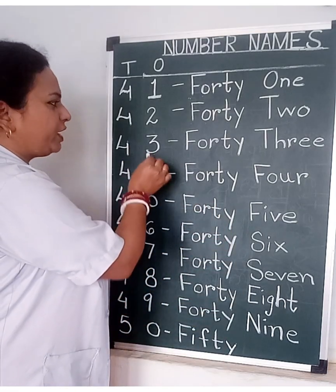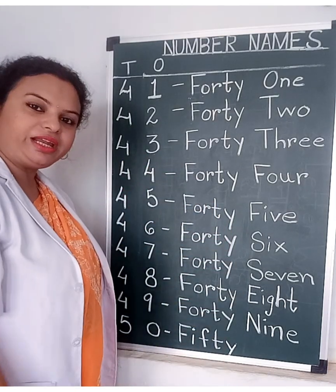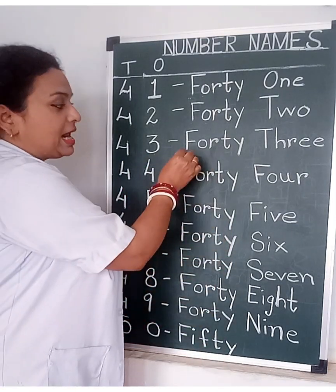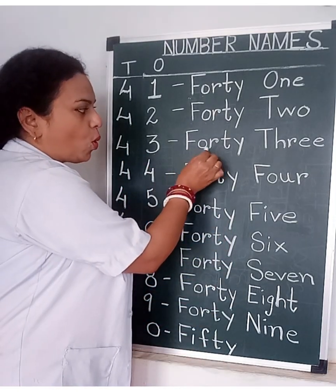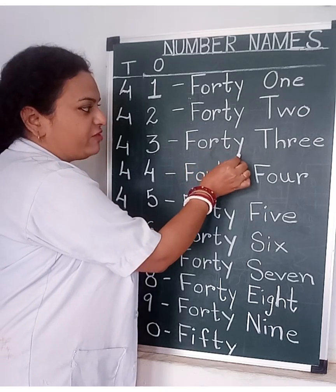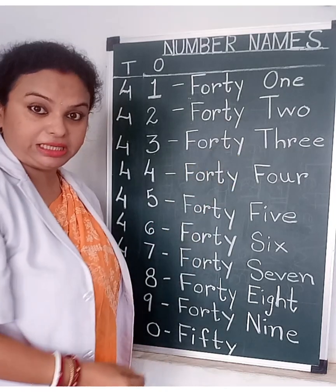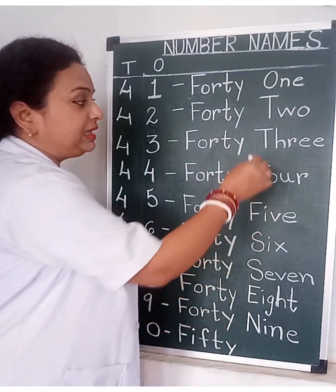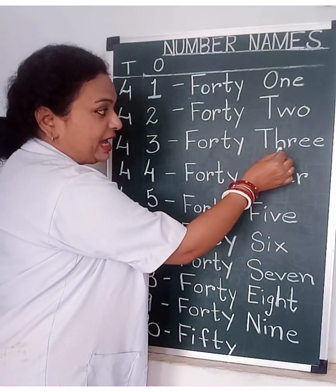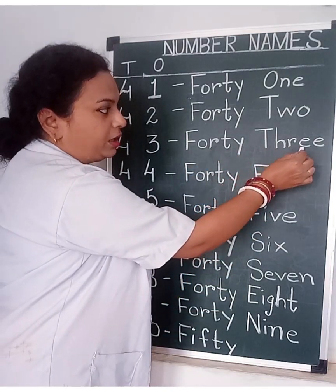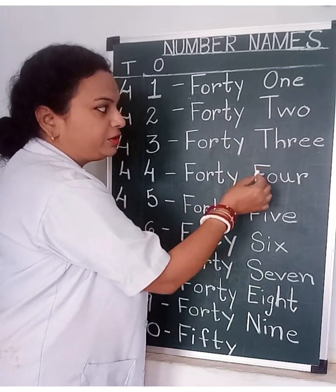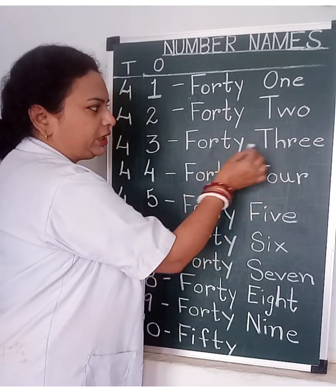4, 3 — 43. F, O, R, T, Y — FORTY. T, H, R, E — THREE. 43.